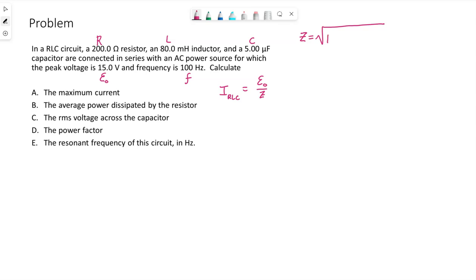Z is the square root of R squared plus the quantity of XL minus XC squared. I'm going to find XL and XC individually, just because I'd like to make sure I haven't made a mistake. Omega is 2π times the frequency, which is 100, and then we multiply by L, which is 80 millihenries, which I want to be in henries.